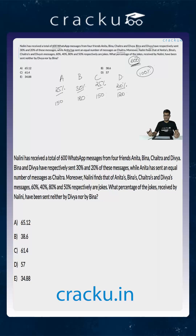But out of these WhatsApp messages, some of them are jokes. The joke percentages of the four friends are 60%, 40%, 80%, and 50% — for Anita, Bina, Chaitra, and Divya respectively.